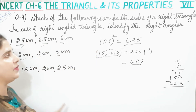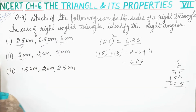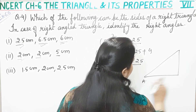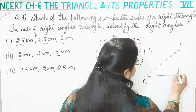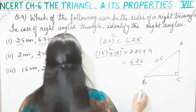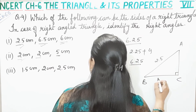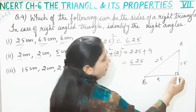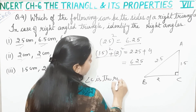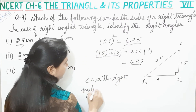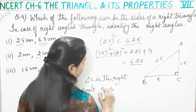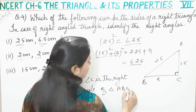Yeh dono barabar hain. It means ki ye jo sides hain ye right triangle ki sides hain. Ab hum inka triangle bana lete hain — right triangle ABC. Jo longest side hai woh hamaari 2.5 hai, yeh 2.5 hai, aur yeh 2, aur yeh 1.5. Toh jo right triangle bana hai, right angle kahan bana — C pe. Toh likh sakte hain ki angle C is the right angle of triangle ABC.